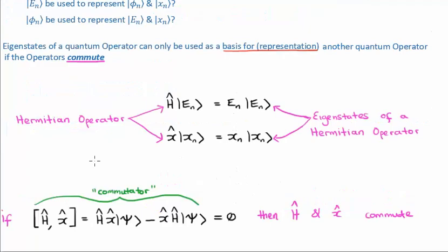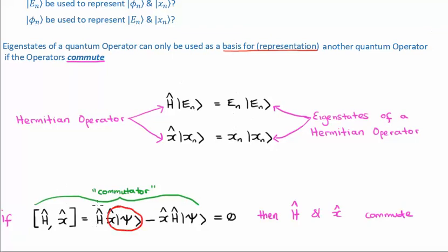If the order of their application is invariant, we're going to get zero, and it is said that the two operators commute. However, if this is non-zero, then the order of their application is important and must be taken as a factor for consideration when doing our quantum mechanical calculations.